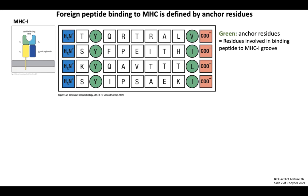One way in which peptide presentation diversity is achieved is through the fact that foreign peptides bind to MHC only at a select few residues along the length of the peptide. The diagrams here show example sequences of peptides that could be loaded onto the same molecule of MHC class 1, which binds to peptides that are 8 to 10 amino acids long. Anchor residues are the green amino acids in this diagram and are the primary residues involved in high affinity binding of peptide to this specific MHC 1 molecule.